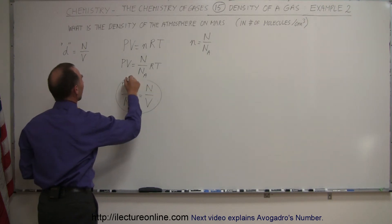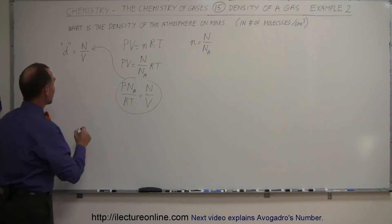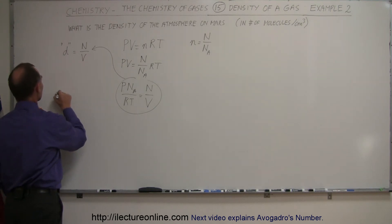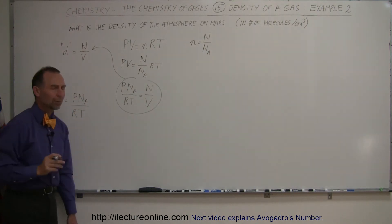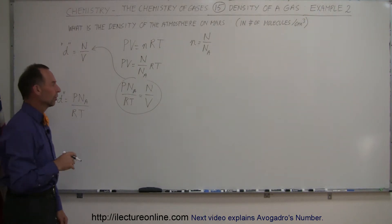That means we can substitute this in for n over V. The density we're looking for equals the pressure times Avogadro's number divided by the gas constant times the temperature. Now we're dealing with Mars here, and the temperature on Mars is a lot colder than it is on Earth.